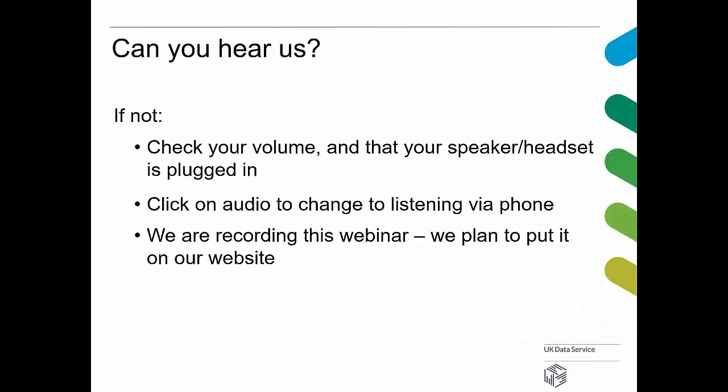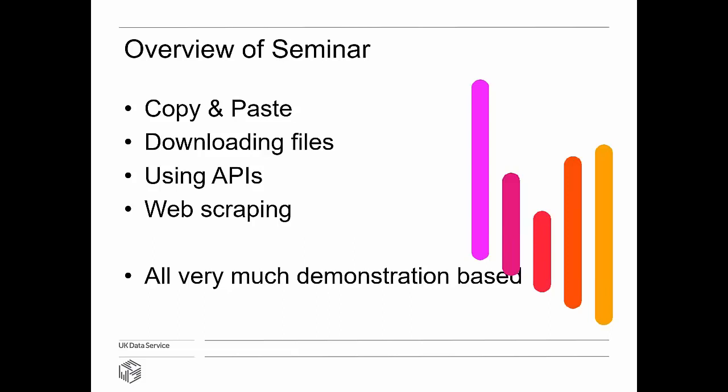In this webinar, we're going to look at ways of getting data from the internet. We're going to cover four different aspects: copy and paste, the simplest of them all; downloading files, either singly or multiple files using programming techniques; using APIs, more of an example rather than explaining what an API is; and finally, we'll do a little bit of genuine web scraping — very simple stuff, but something which actually produces something.